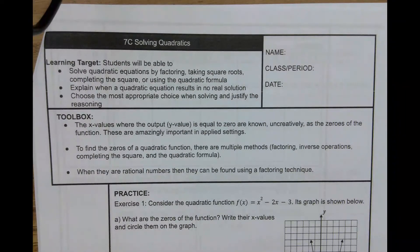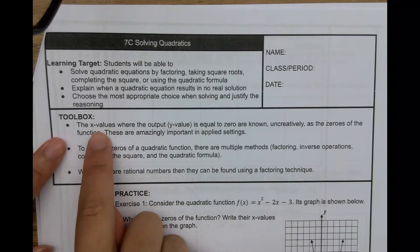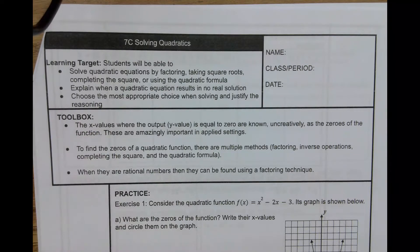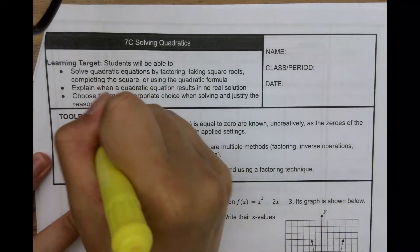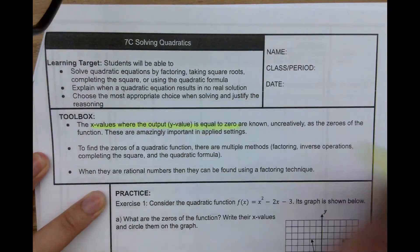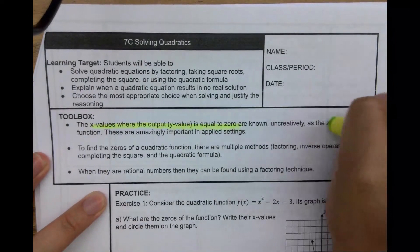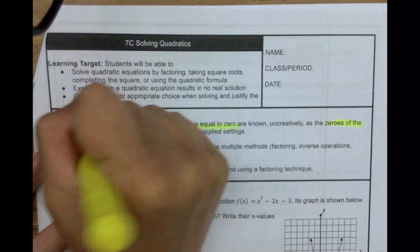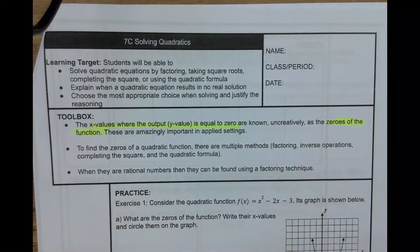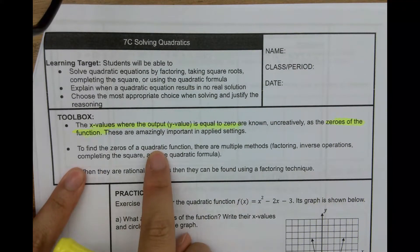This whole learning target of solving quadratics — what we're really finding here are what we call zeros. So, the x-values where the output is equal to zero — this is known as the zeros of the function. These are important in many applied settings, in many of our word problems, and real life situations. We're going to learn multiple ways to find these zeros of a quadratic function.